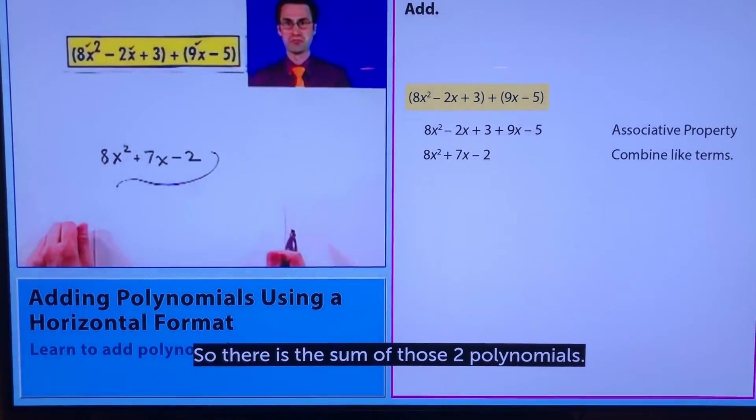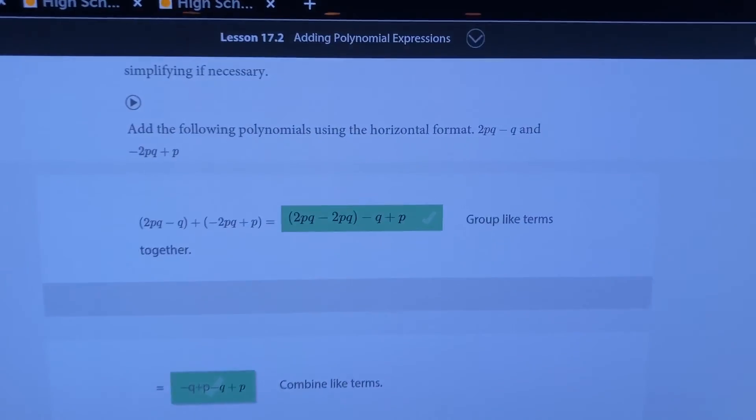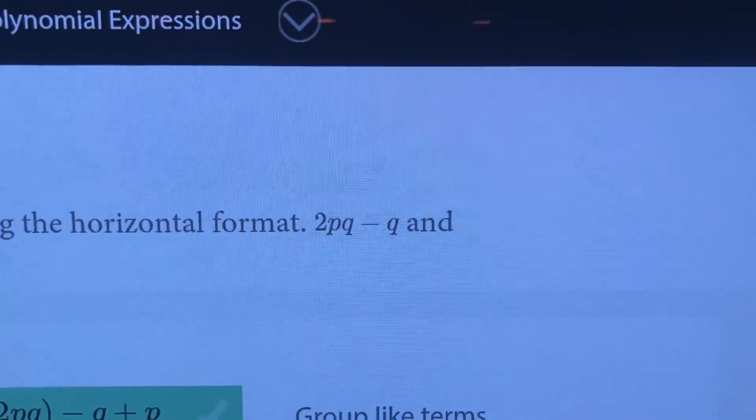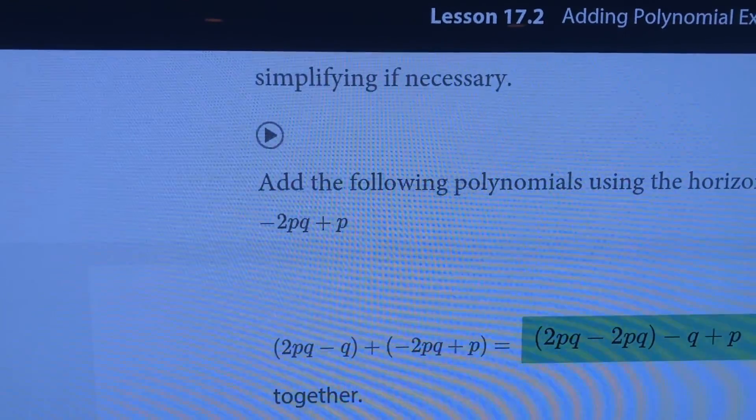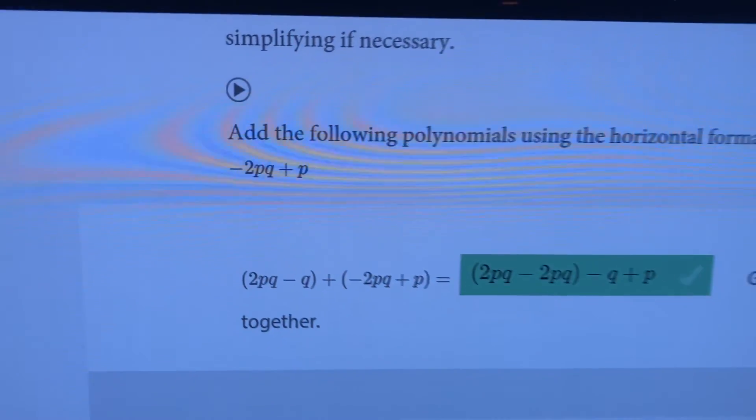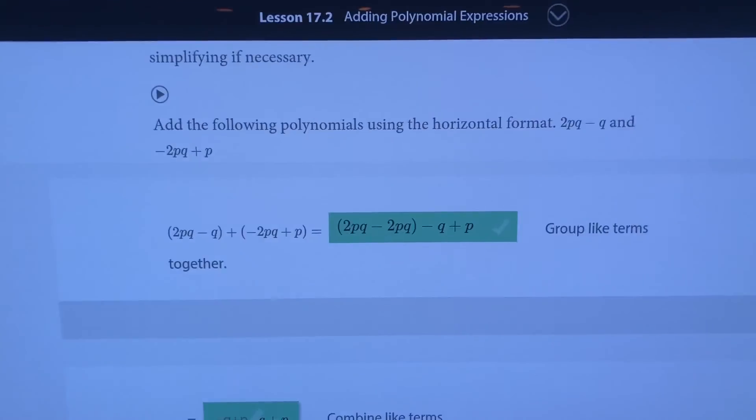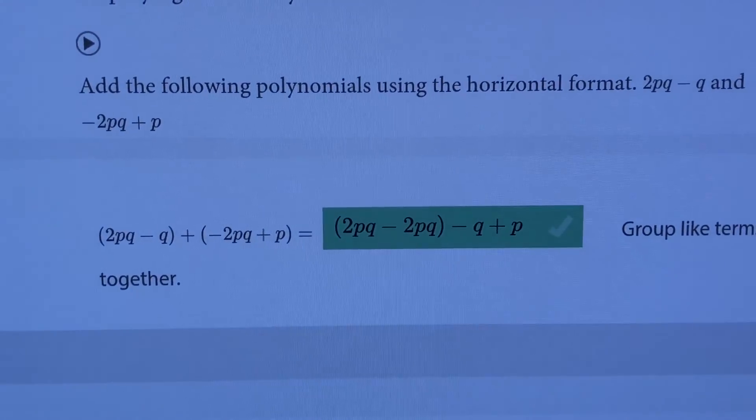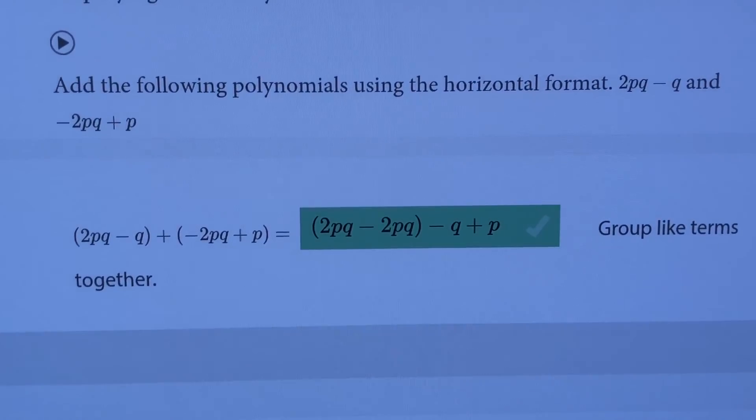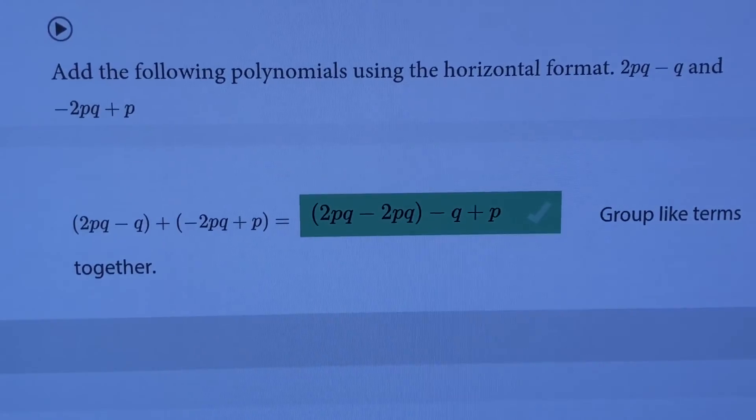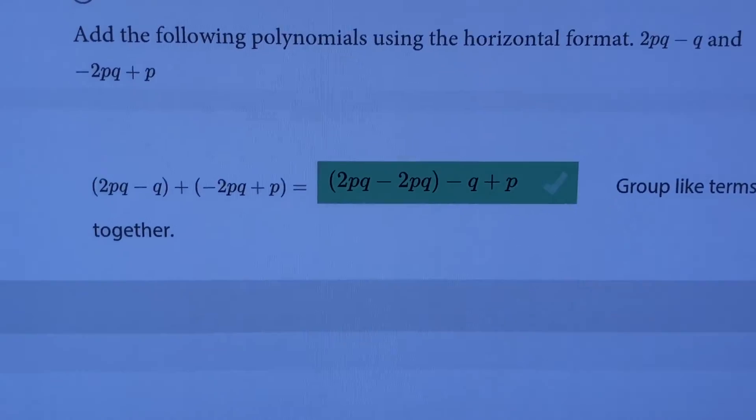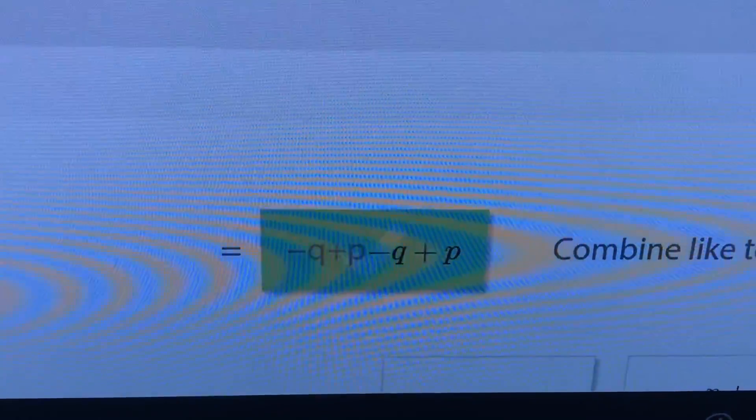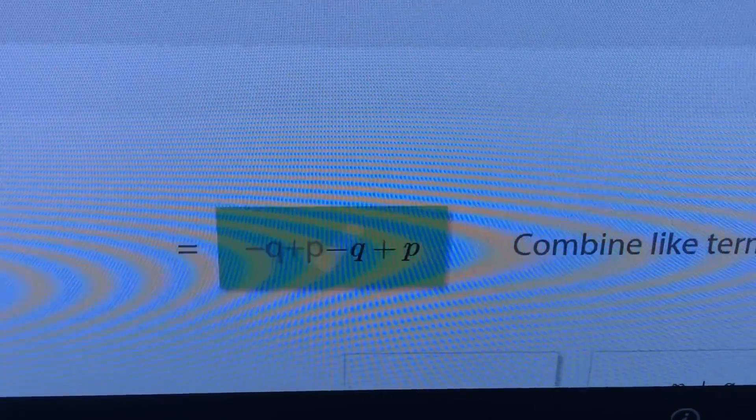Let me add on this one. Example: 2pq minus q and negative 2pq plus p. This is what he was explaining in the video and we're going to put the things together that are in like terms and either add or subtract them. So you can see the 2pq minus 2pq makes them go away, and then minus q plus p leaves me with this answer. Just one more example.